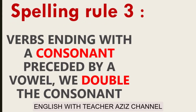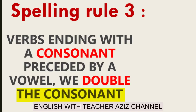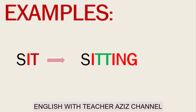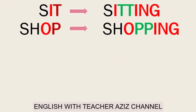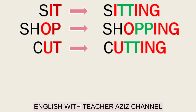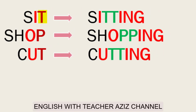Spelling rule 3: verbs ending with a consonant preceded by a vowel — we double the consonant. For example: sit → sitting (the last letter T is a consonant preceded by the vowel I, so we double the T and add -ing). Shop → shopping (last letter P preceded by vowel O, double the P and add -ing). Cut → cutting (last letter T preceded by vowel U, double the T and add -ing).